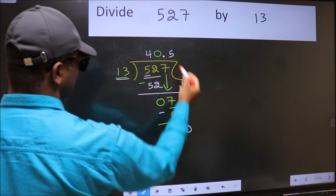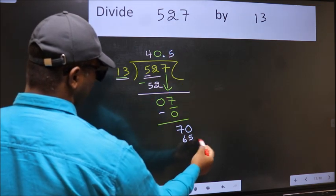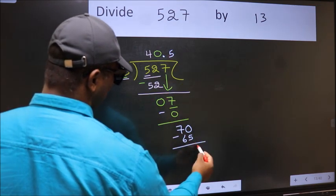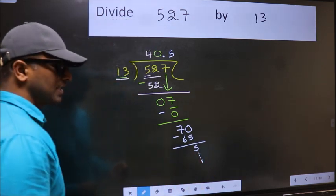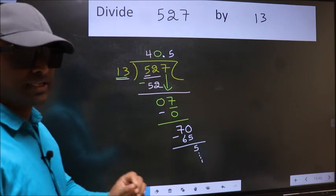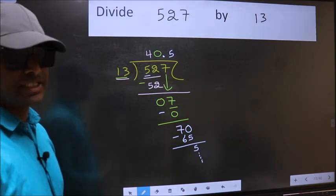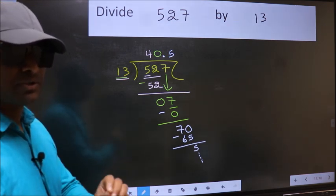Now we should subtract, we get 5. You continue the division, I am not doing that. Did you understand where the mistake happens? You should not do that mistake.